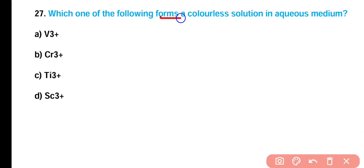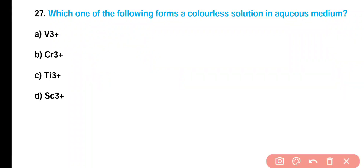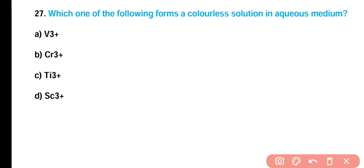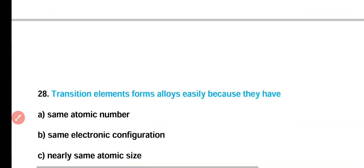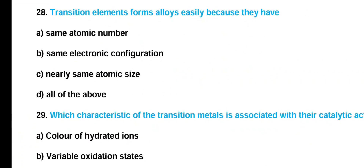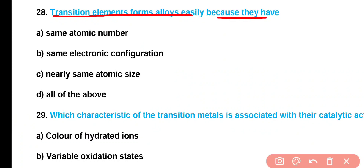Question number 27: Which one of the following forms a colorless solution in aqueous medium — (A) mercury ion, (B) chromium ion, (C) titanium ion, or (D) scandium ion? Correct answer is option D. Scandium ion forms a colorless solution in aqueous medium because scandium has no unpaired electrons in the valence shell.